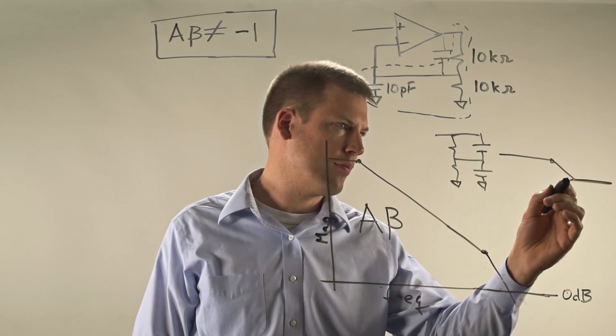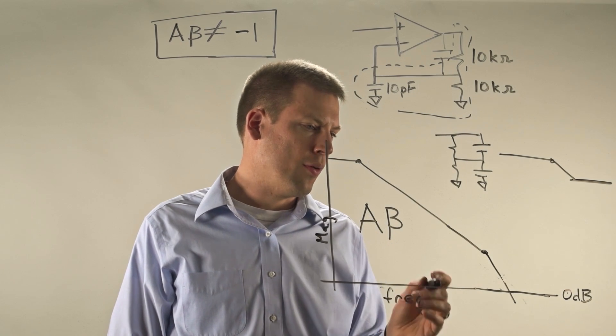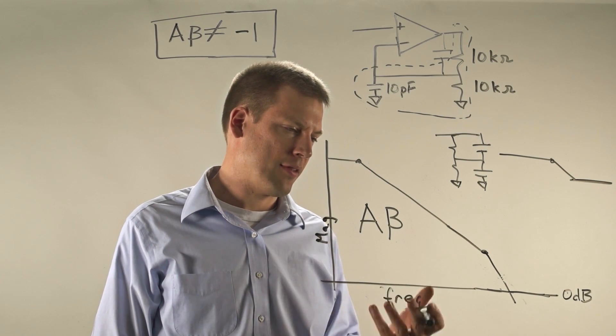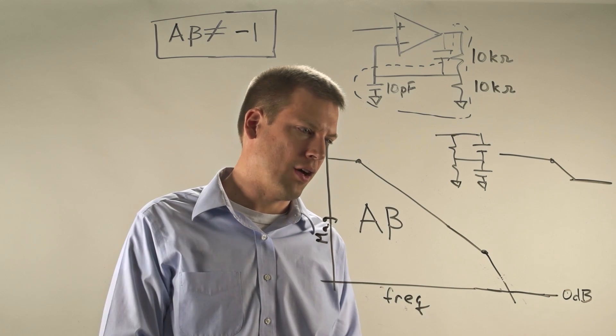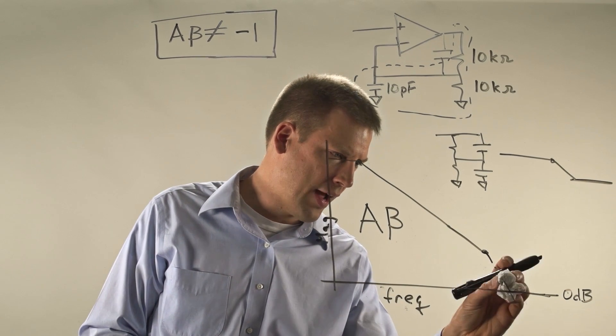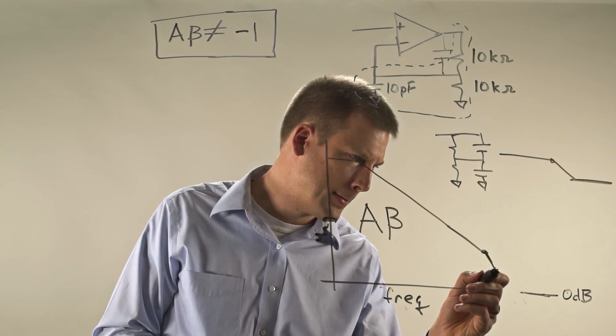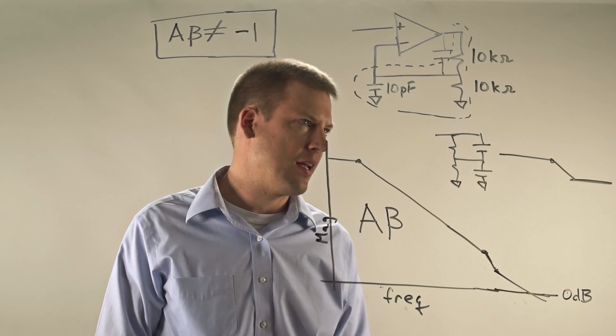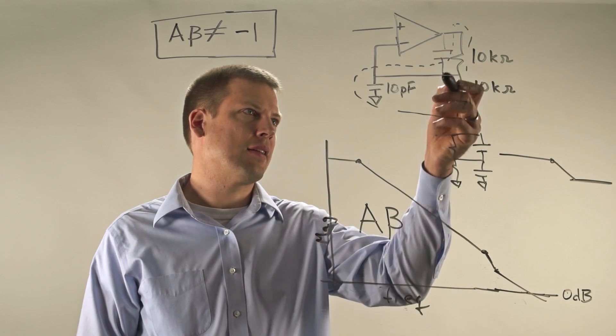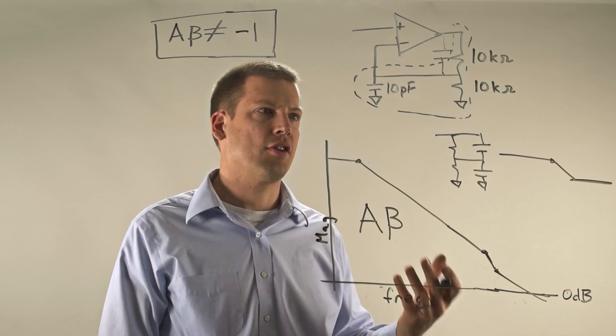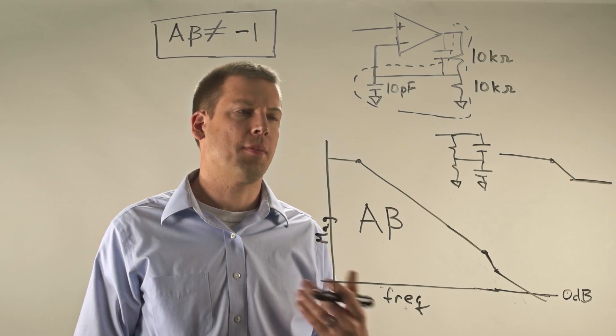So let's say we have something like this. So similar to when we talked about driving capacitance loads in our last video, you can end up having a graph that looks something like this where again you maintain your stability. So adding this extra capacitance in the feedback path is often a great trick to solve your parasitic capacitance problem.